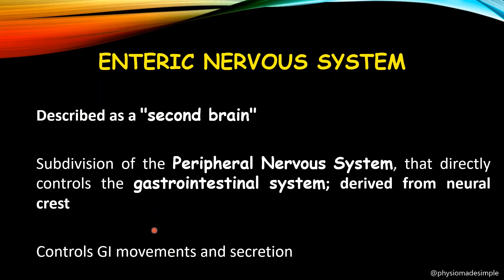These nerves are derived from the neural crest during the embryonic developmental stage, where neural crest cells develop into the enteric nervous system of the gastrointestinal tract. The peripheral nervous system includes somatic nerves and autonomic nerves, and the enteric nerves are a part of the autonomic division. Their main function is controlling GI movements and secretions.